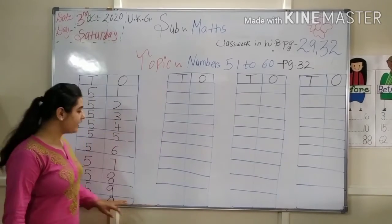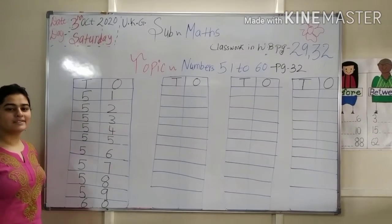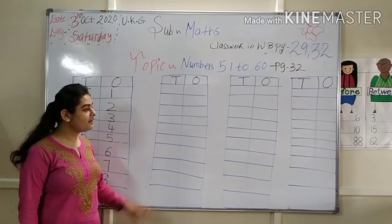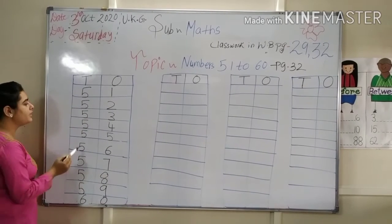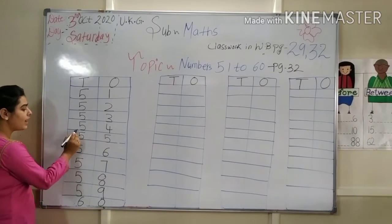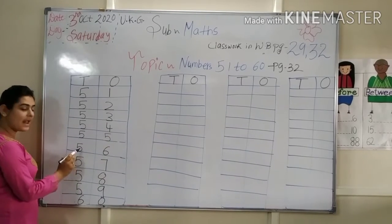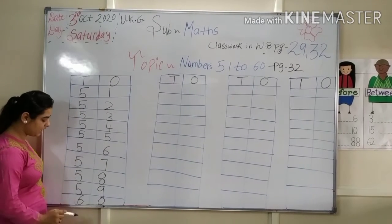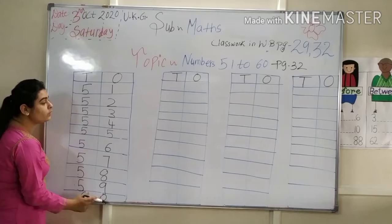Now kids, come to page number 32. 32 par hamara classwork hai. First topic: 51 to 60 numbers. First read with me, then write with me in boxes. 51, 52, 53, 54, 55, 56, 57, 58, 59, 60. Kids, read with me: 51, 52, 53, 54, 55, 56, 57, 58, 59, 60. 51 to 60.